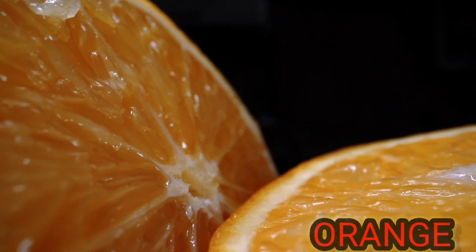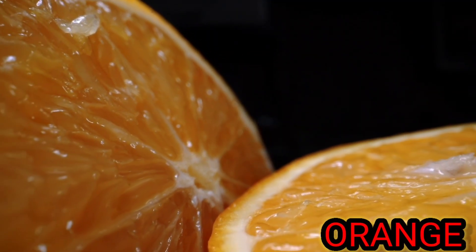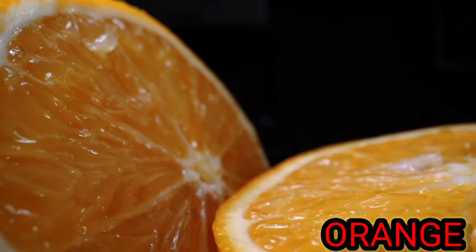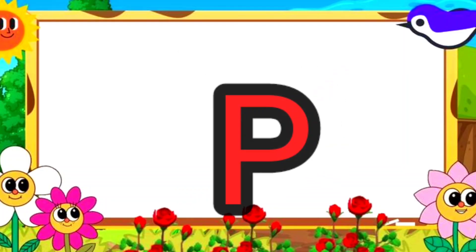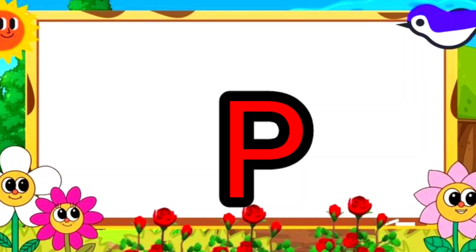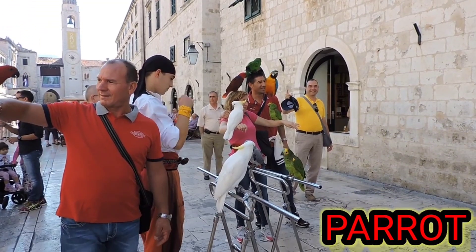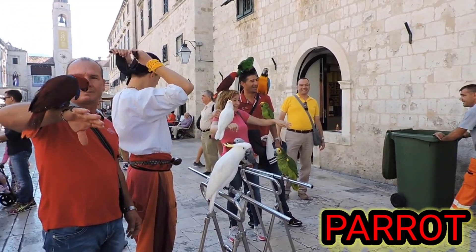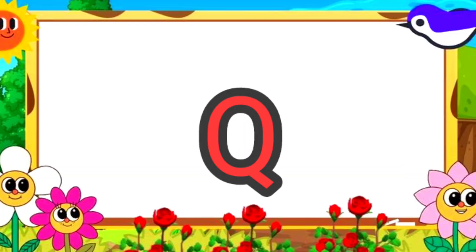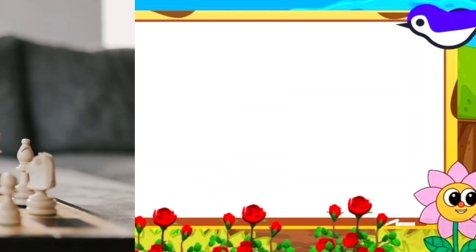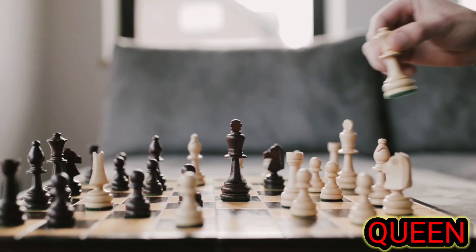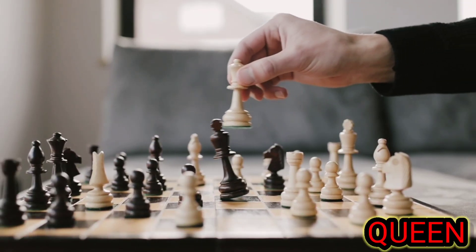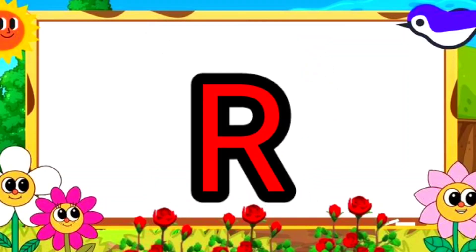N. N for nest. O. O for orange. P. P for parrot. Q. Q for queen. R. R for rose.